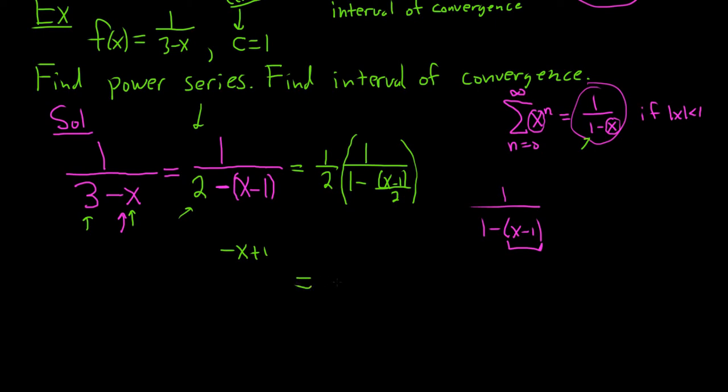This is equal to 1 half. Okay. This is your x right here. So it's going to become infinite sum as n runs from 0 to infinity. And then we have x minus 1 over 2 to the n. By the way, this is only true if the absolute value of x is less than 1. In other words, if the absolute value of x minus 1 over 2 is less than 1. This is your x. This has to be less than 1 in absolute value. Let's keep going.